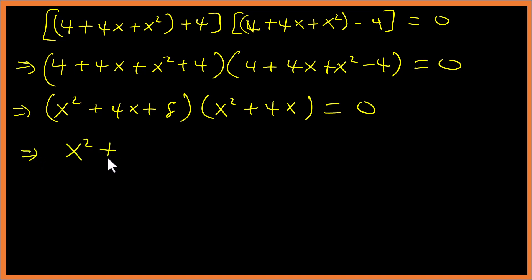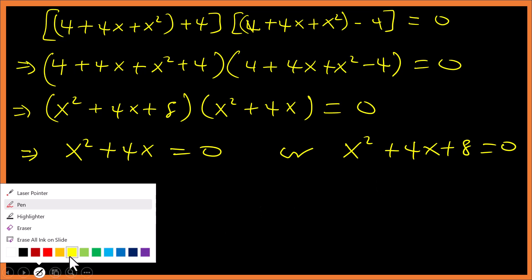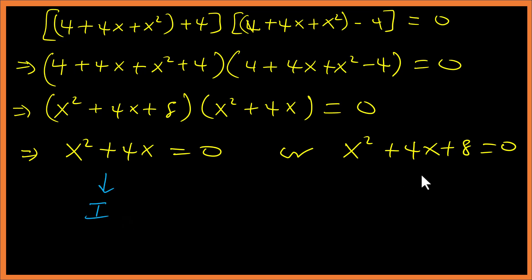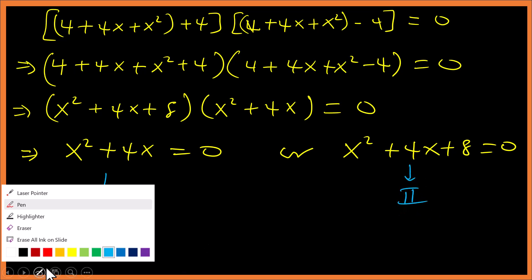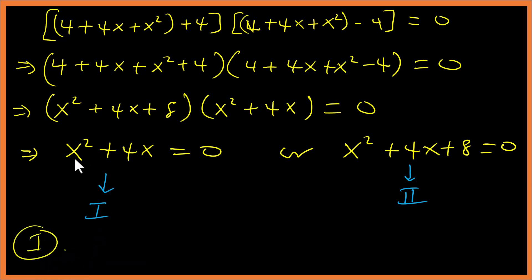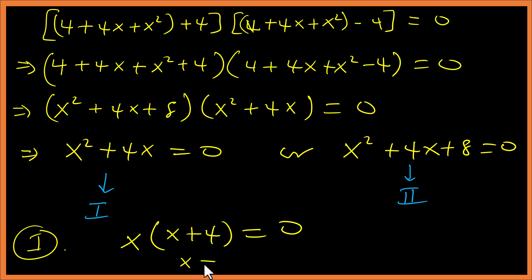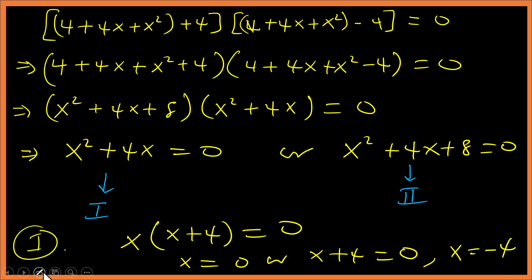So we have x² + 4x + 8 = 0 and x² + 4x = 0. Let's call these equation I and equation II. From equation I: x² + 4x = 0, we factor out x to get x(x + 4) = 0, giving x = 0 or x = -4. So we now have two solutions.